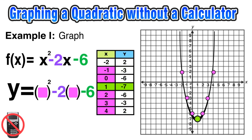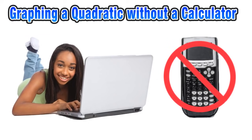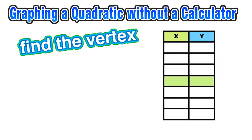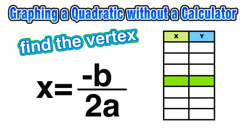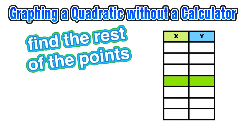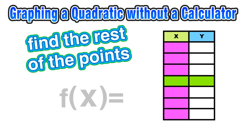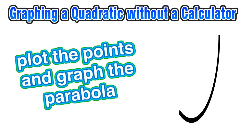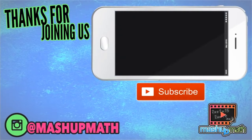That is how you graph a quadratic function without using a calculator. Quick recap: start by finding the vertex using x equals negative b over 2a. Once you find x, plug it into the original function to get y. Then find the rest of the points by plugging x-values into the original function, plot your points from the table of values, and construct your graph. Practice this and make sure you understand the concept in addition to the procedure.